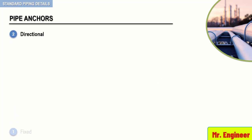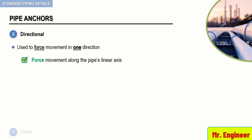Directional anchors are used to force movement in only one direction — along the pipe's linear axis — while preventing it from occurring in a perpendicular direction.